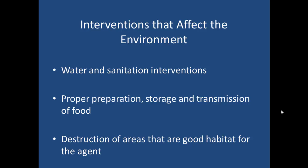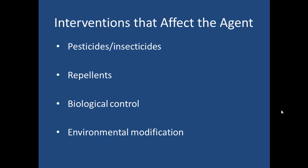Destruction of areas that are good habitat for the agent is important. Another disease — schistosomiasis — the agent tends to grow in the tall grass around riverbeds, and if you can remove that, you can remove the agent that causes transmission. The schistosomiasis has part of its life cycle in the snail. If you can remove the growing habitat for the snail, you can destroy the infectious agent as well. The environmental tradeoff for that is questionable and needs to be taken case by case. Interventions that affect the agent include pesticides and insecticides — and not just for mosquitoes, but also the tsetse fly, black fly, ticks, and fleas, all of which transmit different diseases.